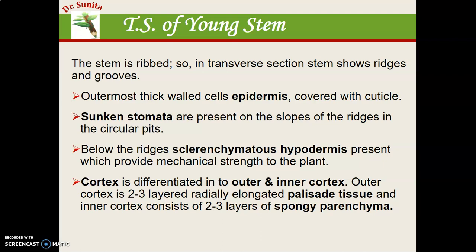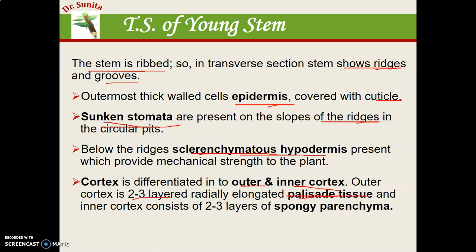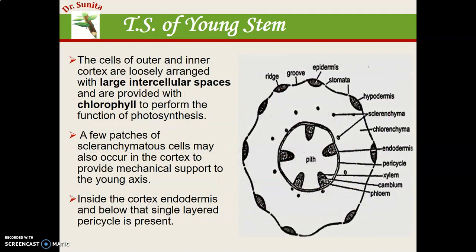First, the TS of the young stem. The stem has ribs and furrows present. The transfer section through these ribs will show the outermost layer, that is the epidermis, covered with cuticle, because Ephedra shows xerophytic characters. Another xerophytic character is sunken stomata. On the slope of the ridges, circular pits will be present, and the lower part of the ridges has sclerenchymatous hypodermis, which provides mechanical strength. The cortex is differentiated into inner cortex and outer cortex, with two to three layers of palisade tissue present in the outer cortex.